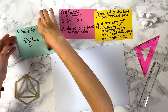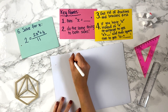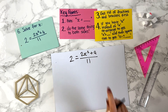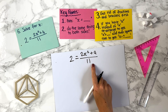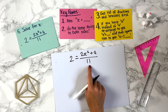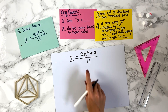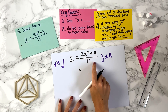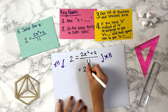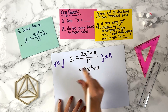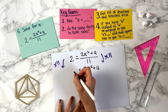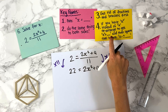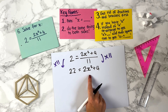Question 6: solve for x — 2 equals (2x squared plus 4) divided by 11. We see a fraction, so key point 3: get rid of fractions. To undo the division by 11, we multiply both sides by 11: the right hand side becomes 2x squared plus 4, and 2 times 11 gives 22 on the left. We also notice we have x squared, not x, so key point 4 applies — we want x squared on its own on one side.